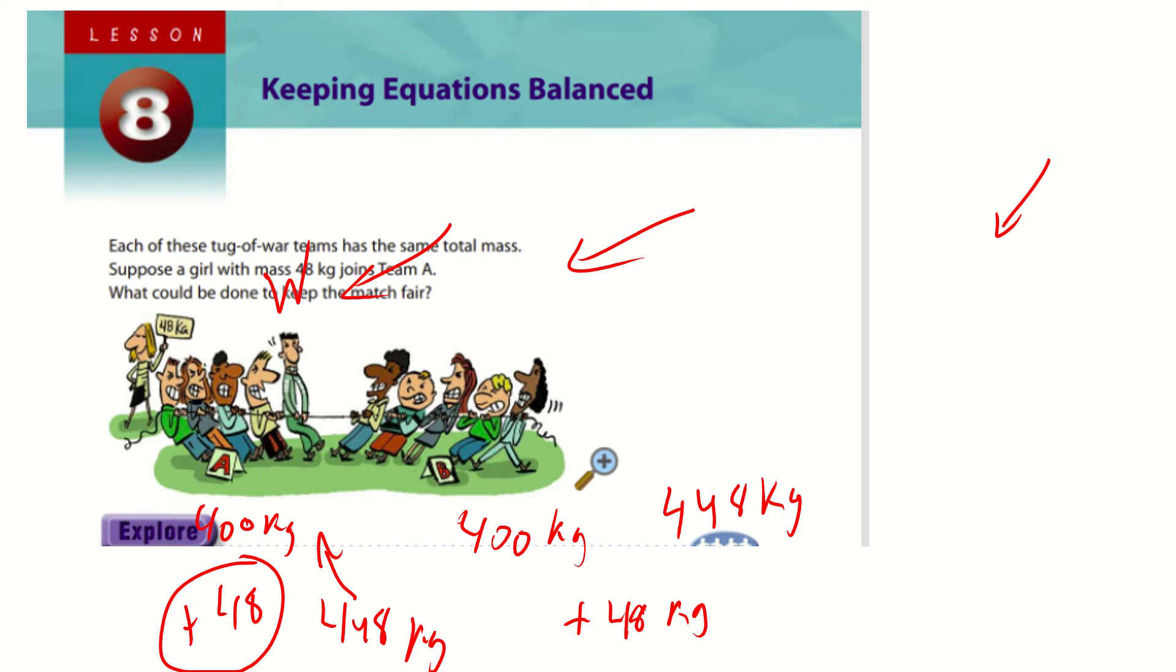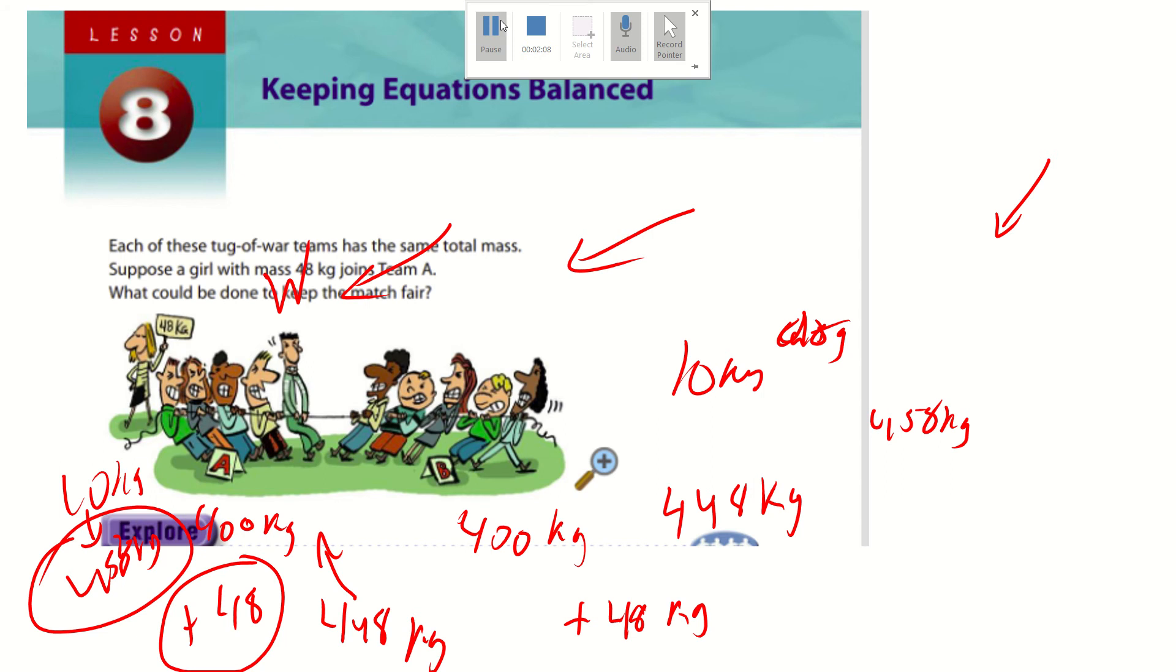So that's what this lesson is basically about, doing things on one side to keep it equal on the other with different equations. Let's say that team B added 10 more kilograms with a dog. Well, if we wanted to make that fair, because now this is 458 kilograms, we would have to add 458 kilograms, or 10 kilograms here to get 458. This is called the preservation of equality to preserve equality, and this is our lesson today.